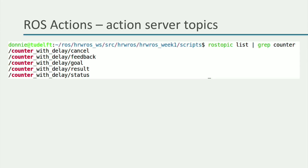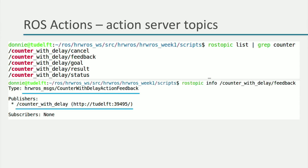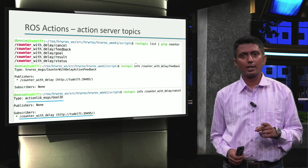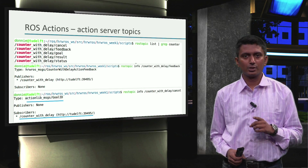While the names of these topics are quite intuitive, let's understand two important things. First, the feedback topic is published by the action server and has the action_feedback message type. Second, the action server subscribes to the cancel topic, which is of the goal ID type. So any node that wants to cancel a specific goal can publish the specific goal ID on the cancel topic, and the server will take care of cancelling the goal processing for that goal.